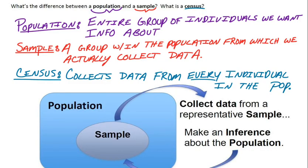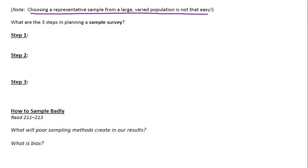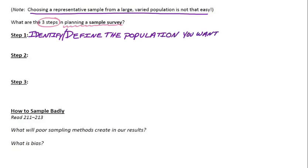So going back to our picture here, we'd like to obtain a sample that is representative of the entire population. So how can we go about doing that? The first note here says choosing a representative sample from a large varied population is not that easy. So then what are the three steps for best practice in planning a sample survey? The first step, we need to actually identify or define the population that we're interested in. So we need to decide who or what it is we want to learn about.